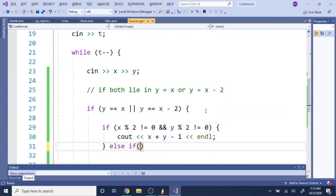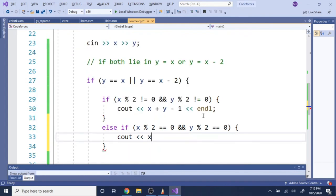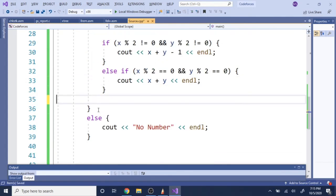Now, we need to check if they are both even. So, if x mod 2 is equal to 0 and y mod 2 is equal to 0, then we're going to print out x plus y. And, yeah, that's pretty much the whole algorithm.